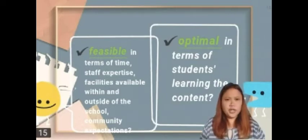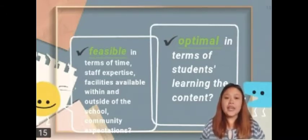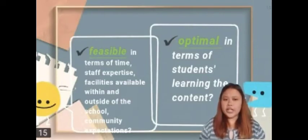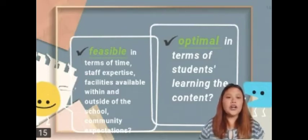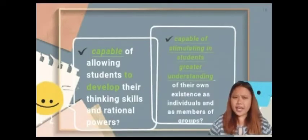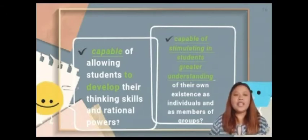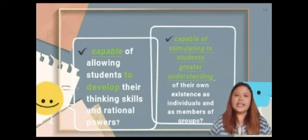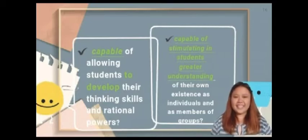Are they optimal in terms of students learning the content? Learning content is broadly defined as the topics, themes, beliefs, behaviors, concepts, and facts, often grouped within each subject area under knowledge, skills, values, and attitudes expected to be learned. Are they capable of allowing students to develop their skills, thinking, and rational powers? Allowing their ability to think clearly and rationally includes the ability to engage in reflective and independent thinking.